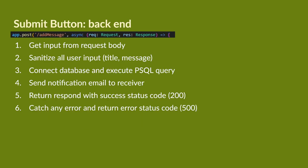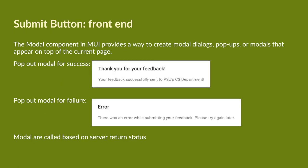Then I'm going to talk about the submit button from the backend. We are using an Express API where we create an endpoint called add message. Basically what it does is it will first get all the input from the request body and then sanitize all user input such as title and message. Then the endpoint will connect to the database and execute the PostgreSQL query to insert the user's message into the database. Then we will send a notification email to the receiver. If the response is successful, we will return to the front end with a status code of 200. If the endpoint catches any kind of error, it will return an error status code of 500. By using these return status codes, we can have our backend server interact with our front end.